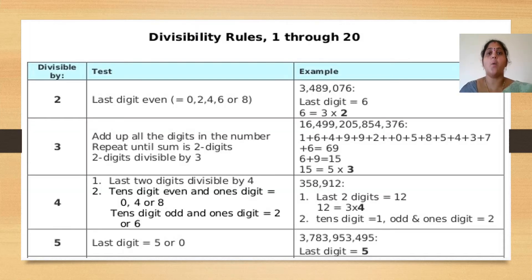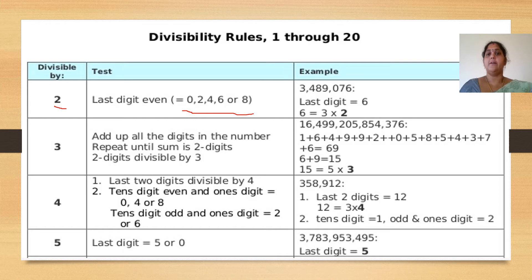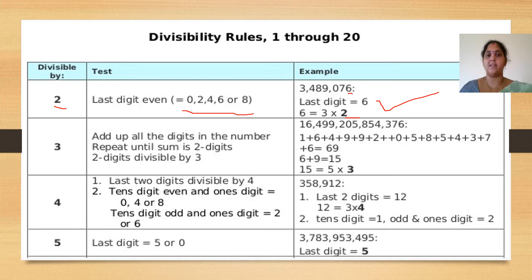Divisibility rules from 1 through 20 are given here. The same rules we have seen before are also followed here. For 2, 3, 4, and 5 in this table: divisibility by 2 means the last digit should be a multiple of 2. For 3, you have to add all the digits in the given number.